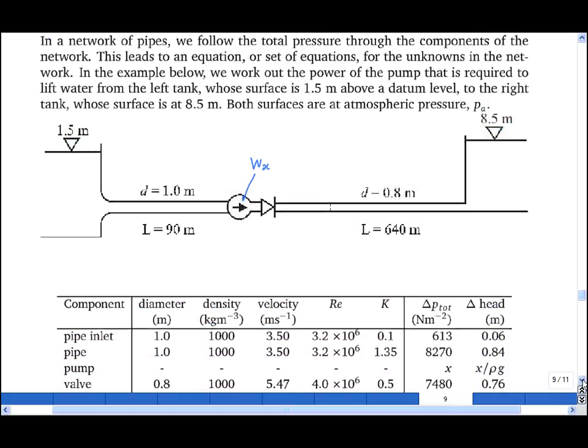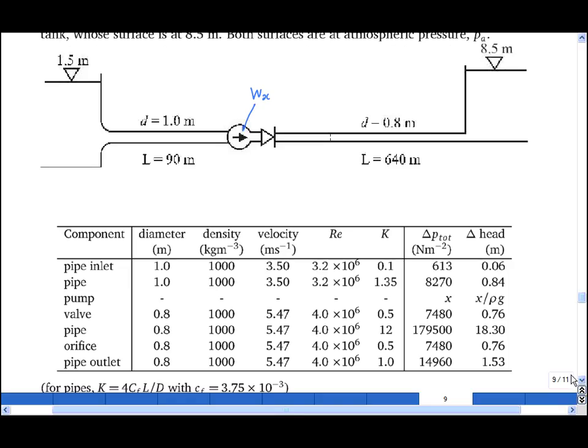To do this, we will consider the loss coefficient of each element in turn. For example, the first one is the pipe inlet. It has diameter 1 meter. The density of the fluid is water, so it's 1,000 kilograms per meter cubed.